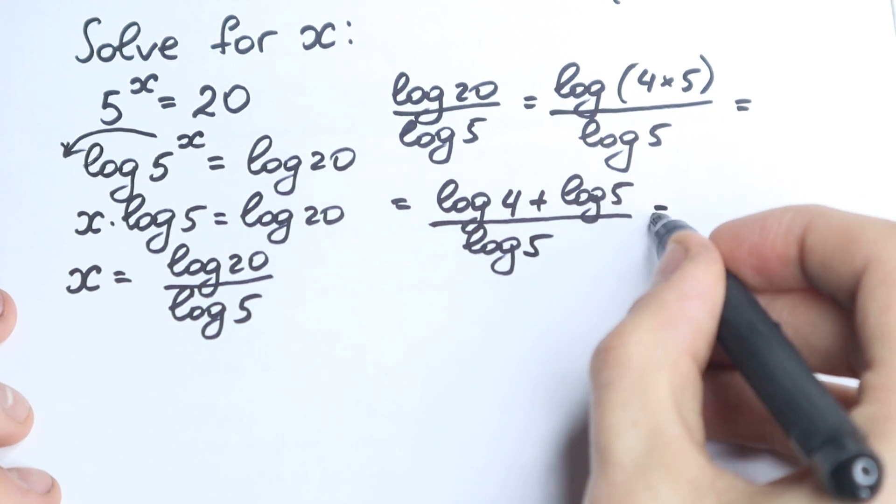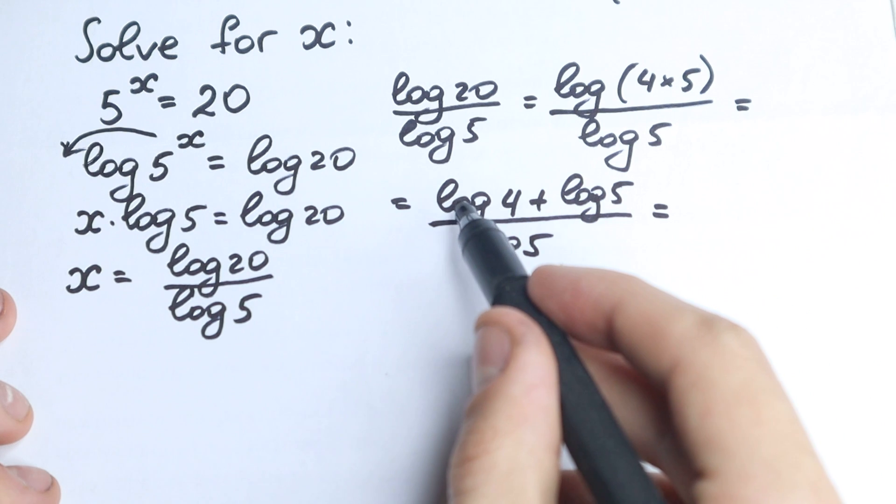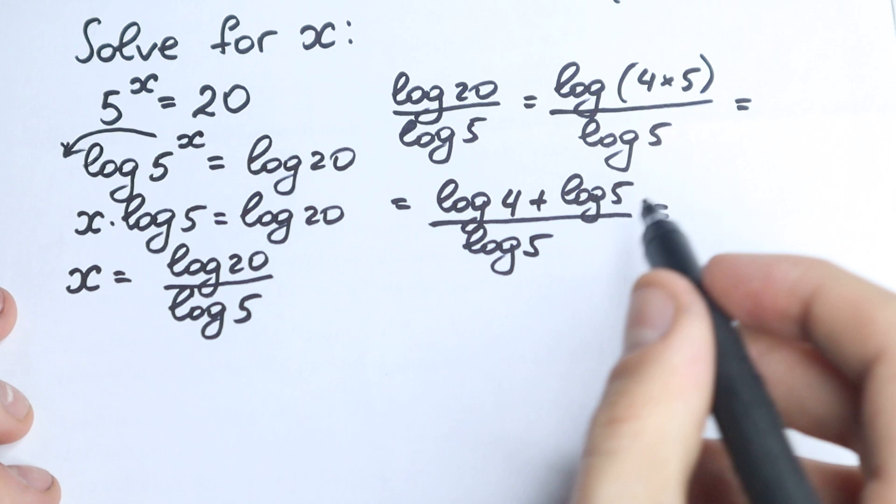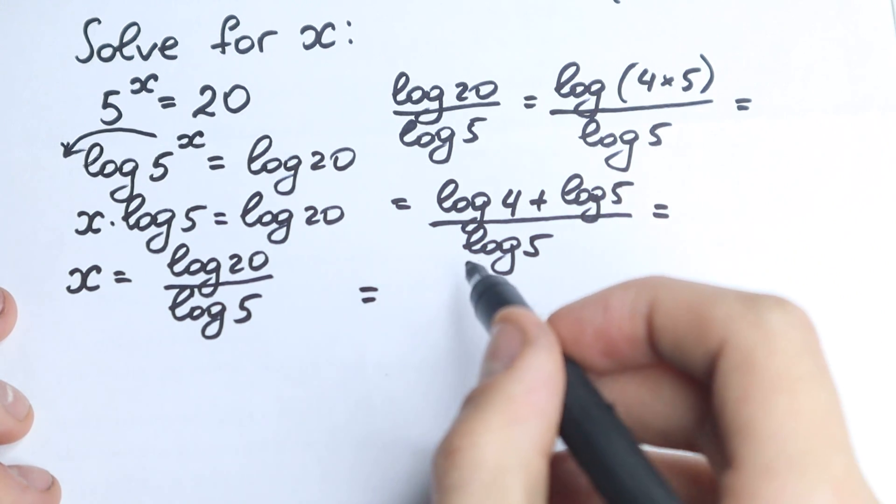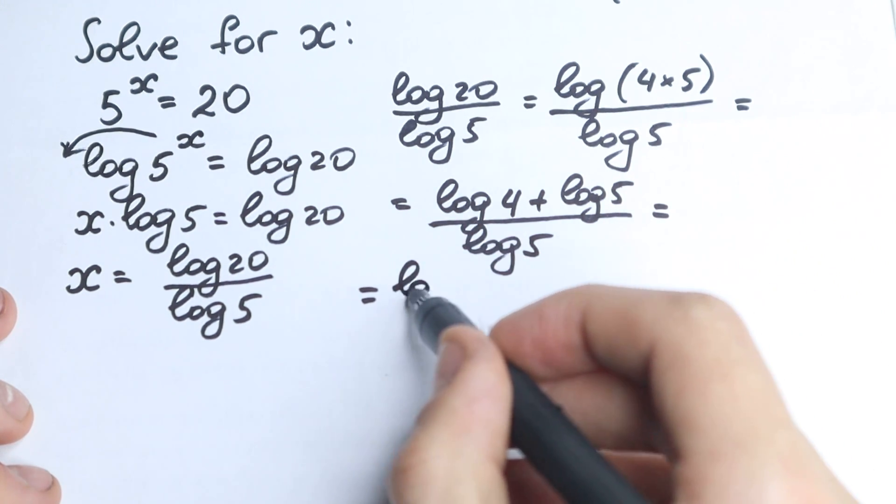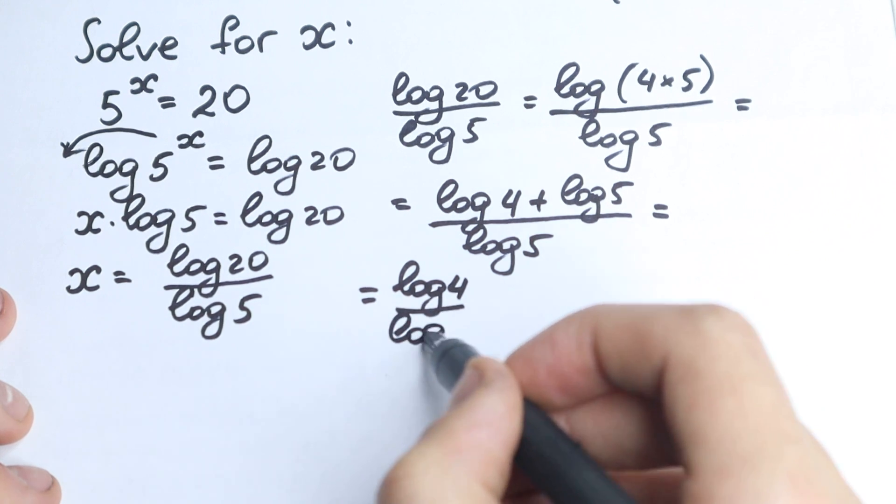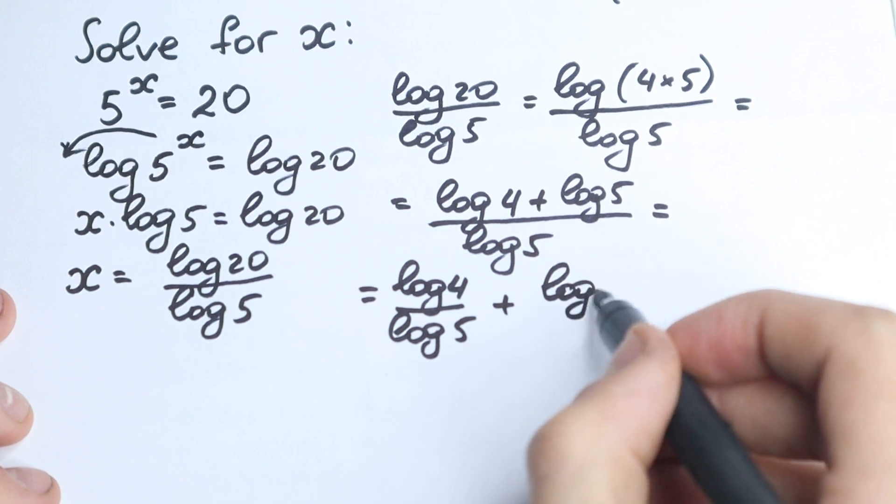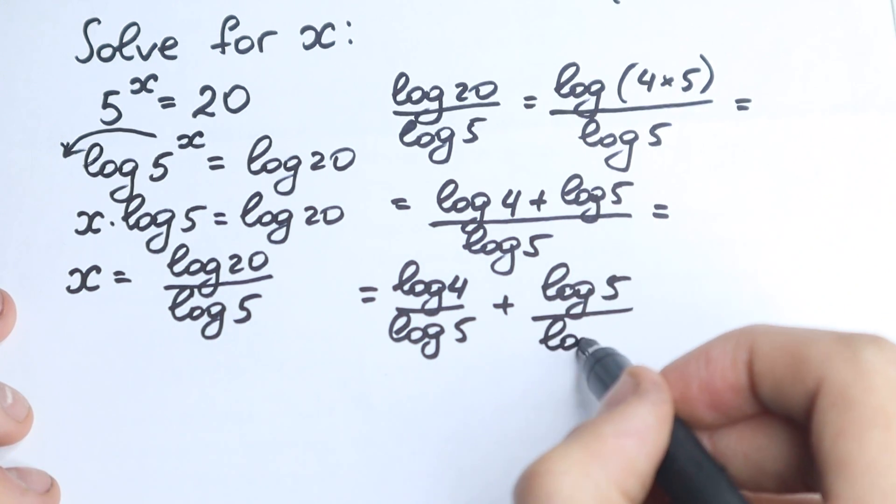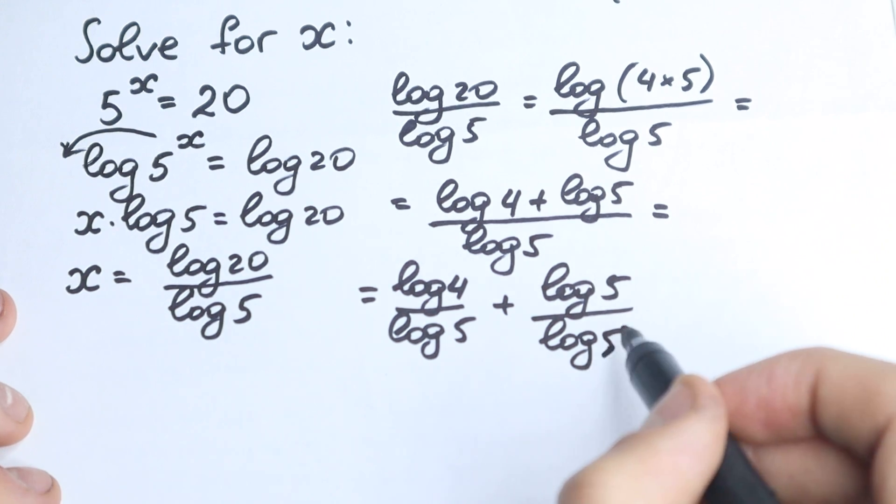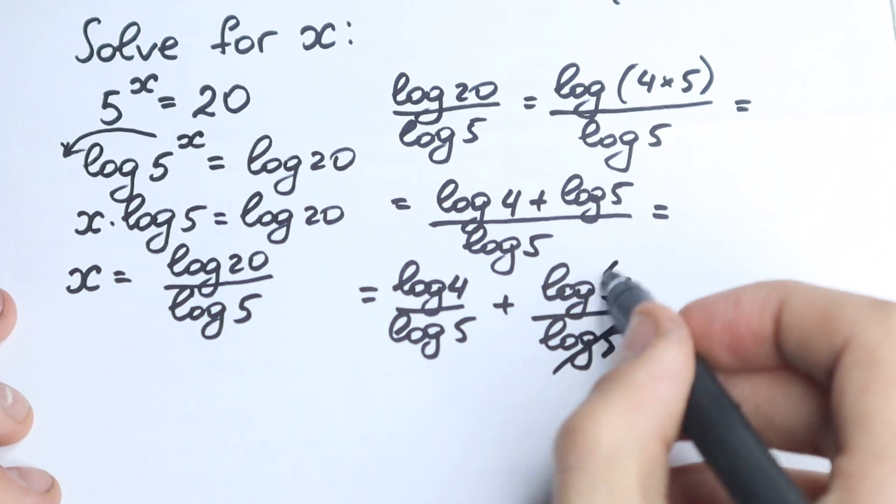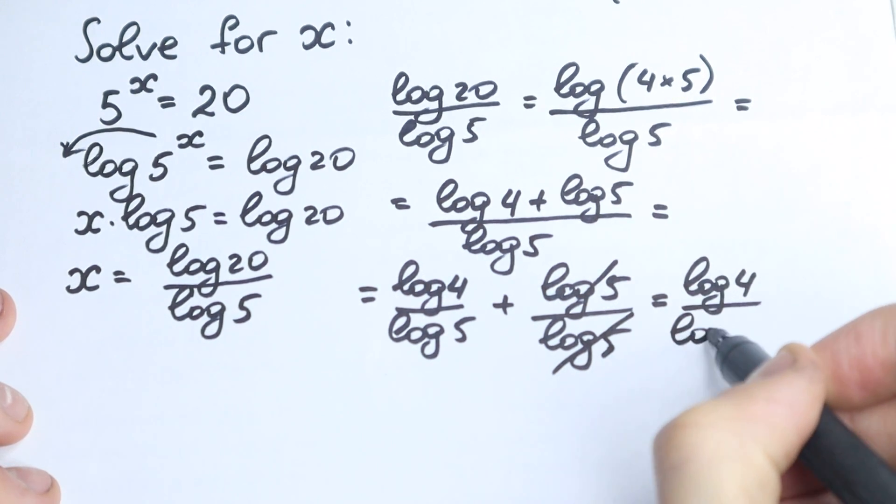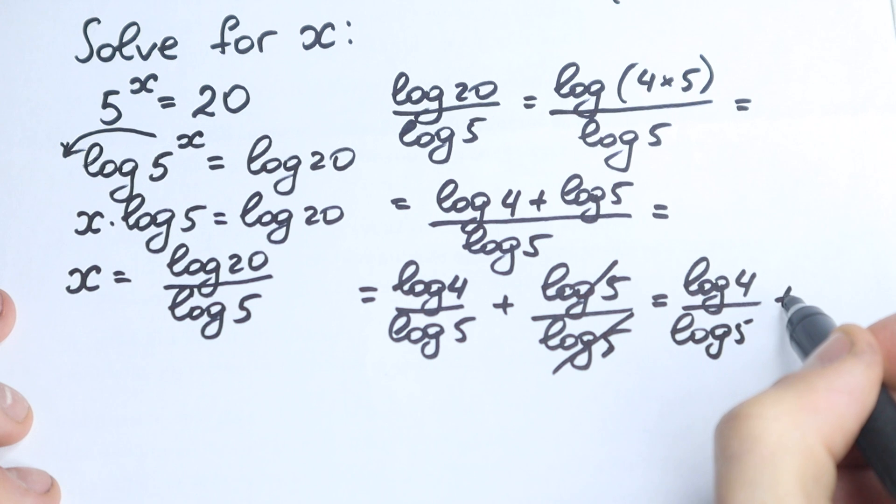And maybe last step, let's divide these both elements by log 5. We can do this. This is a very easy property. So log 4 over log 5 and plus log 5 over log 5. Right here, log 5 over log 5 equals 1, and we have our answer.